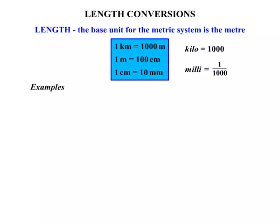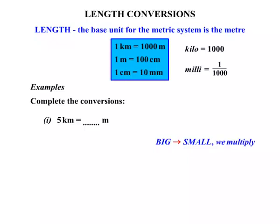Let's look at some examples. We need to complete the conversions. Firstly, five kilometres equals how many metres? Now if we are changing something big to something smaller, we're going to multiply. If we're changing something small to something big, we divide. So in this case we're changing from kilometres to metres — the larger measure changing to the smaller measure.